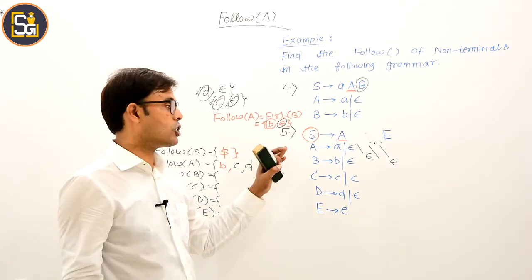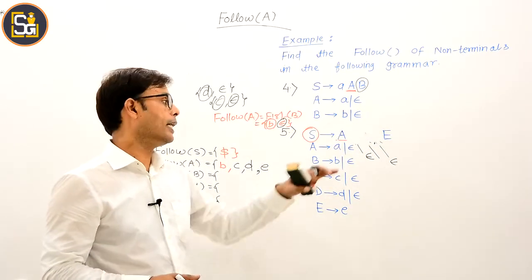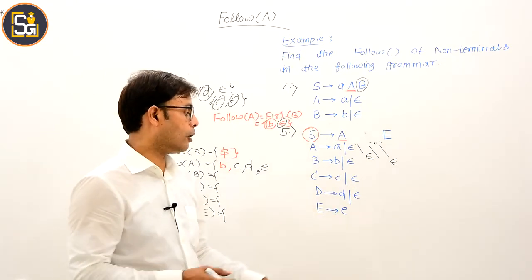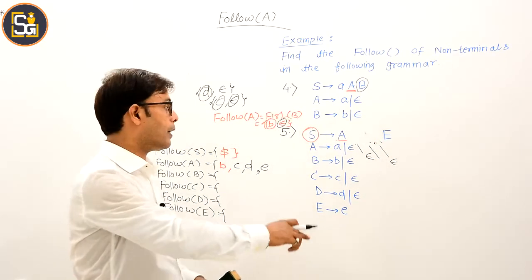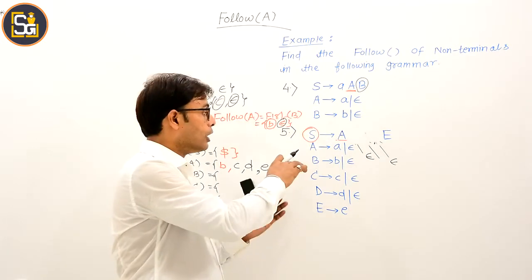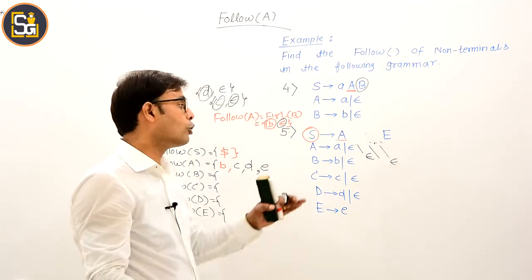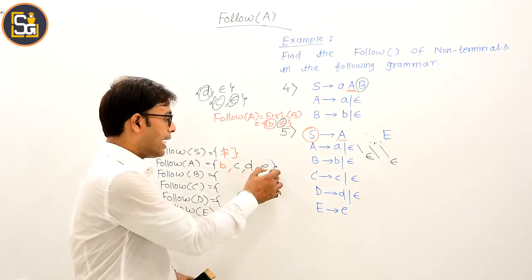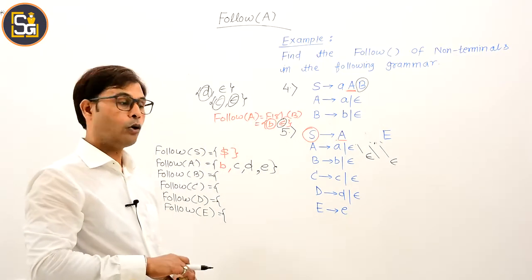The last scenario: S derives A E is what remains. Since E does not have epsilon, we stop there. But hypothetically, if E also had epsilon, then E would also be absorbed, the production would become S derives A, and since A's immediate right would be nothing, rule 4 would apply: FOLLOW of A equals FOLLOW of S, meaning dollar would also be unioned in.